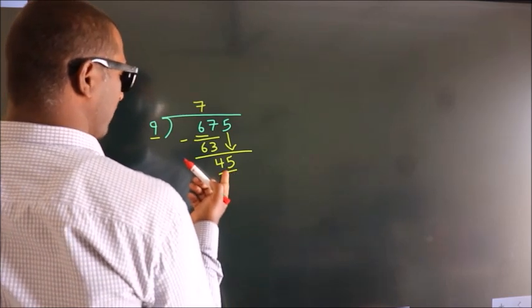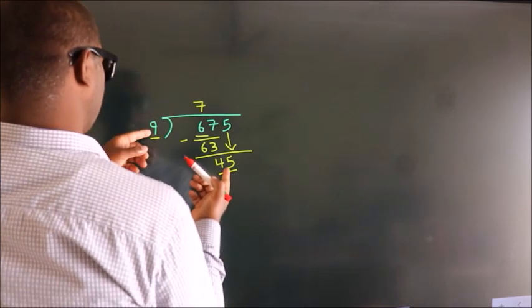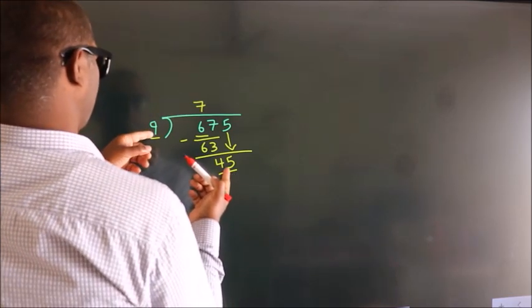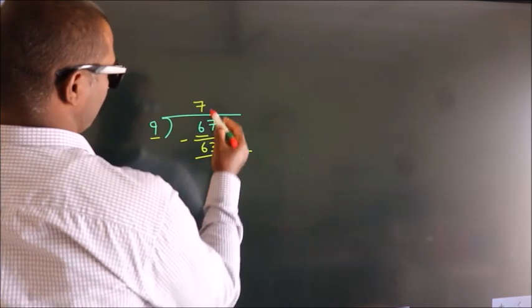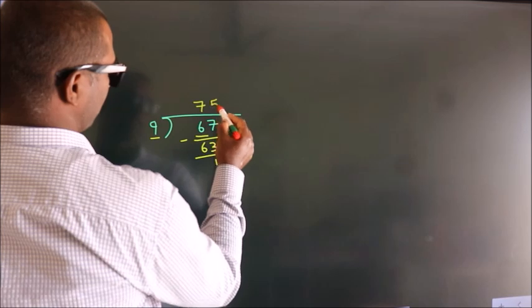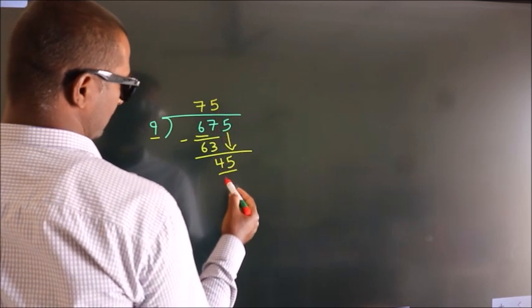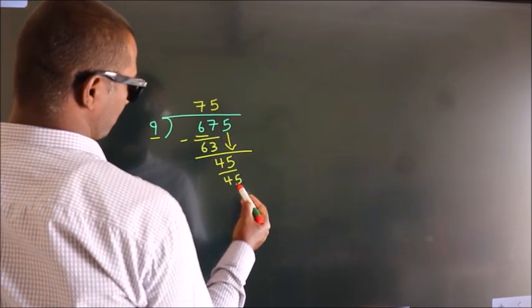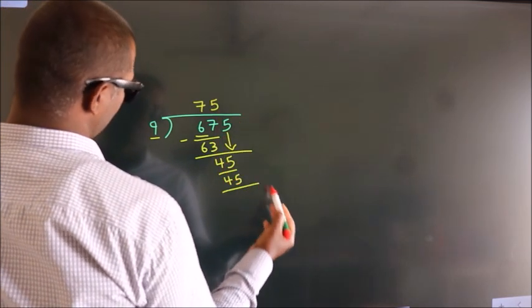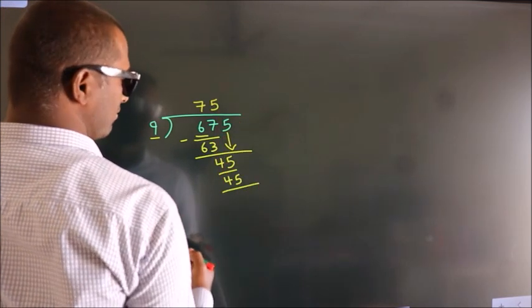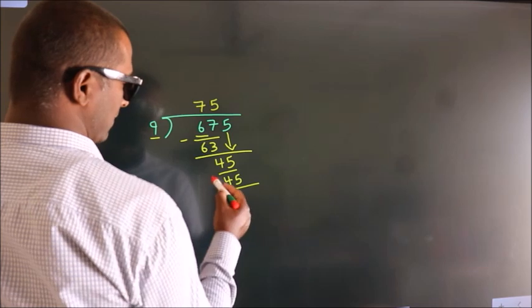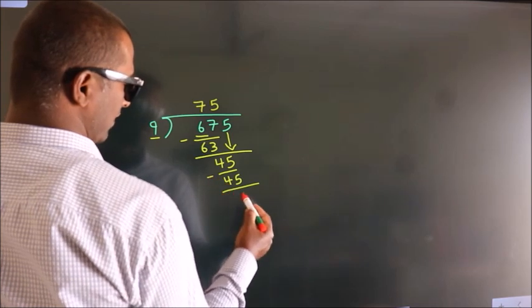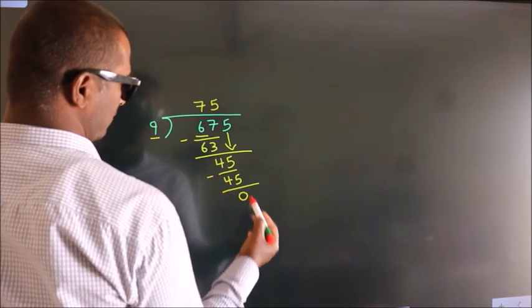When do we get 45 in the 9 times table? 9 fives are 45. Now we subtract, and we get 0.